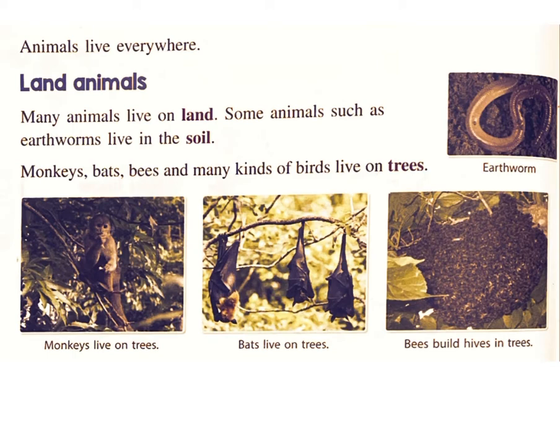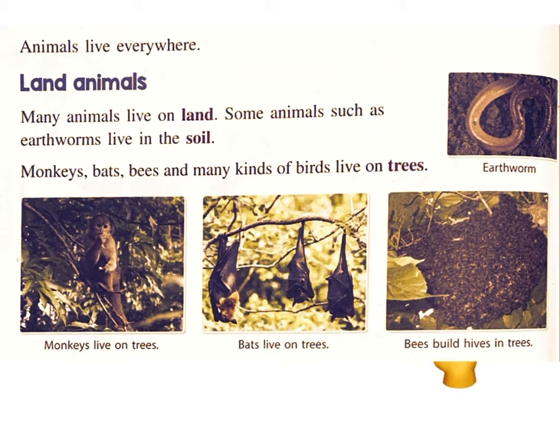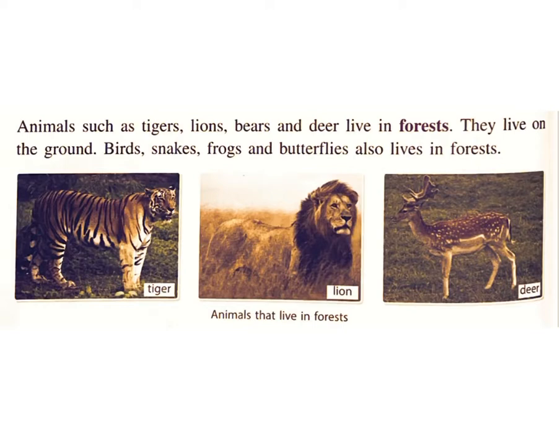Some animals, such as earthworms, live in the soil. Monkeys, bats, bees, and many kinds of birds live on trees. Monkeys live on trees, bats live on trees, and bees build hives in trees.